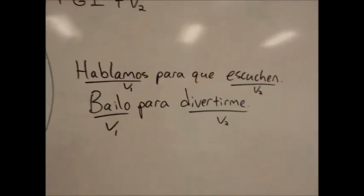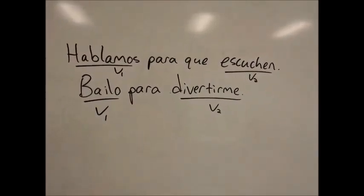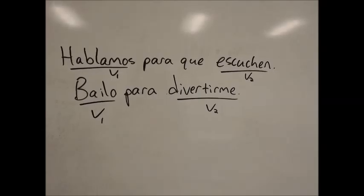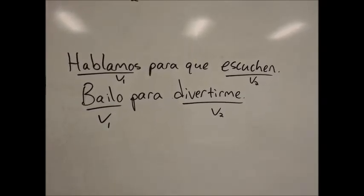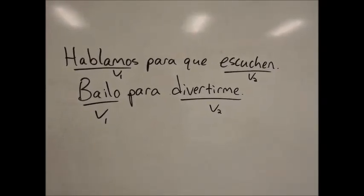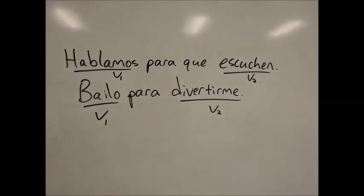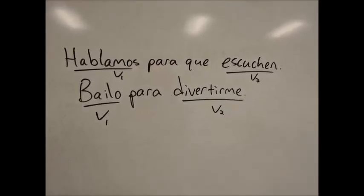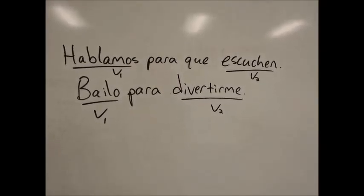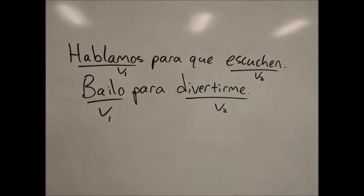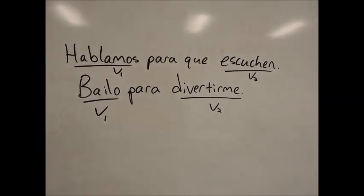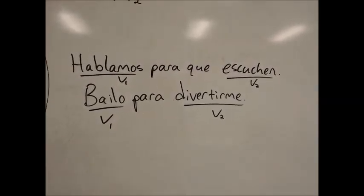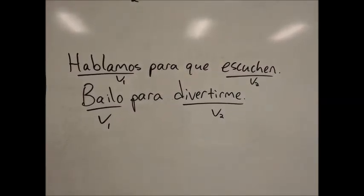I have two examples to make it more clear. Example one: hablamos para que escuchen, we talk so that you guys listen. The subject of the first part is nosotros and the second part is ustedes. Since there's a difference in subject, we add que after para and conjugate escuchen in the subjunctive. Second example: bailo para divertirme. The subject is yo in both parts, so divertirme stays in the infinitive.